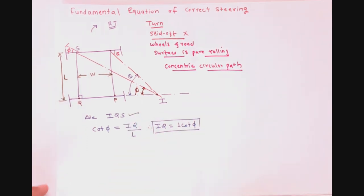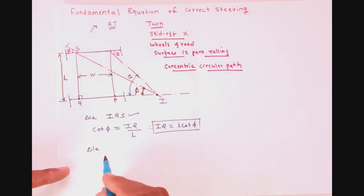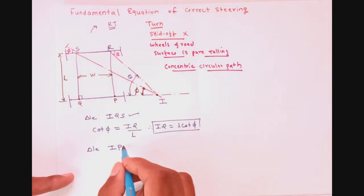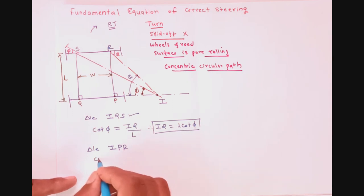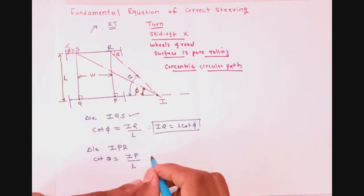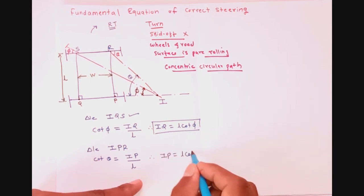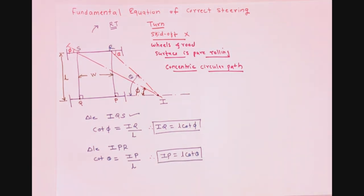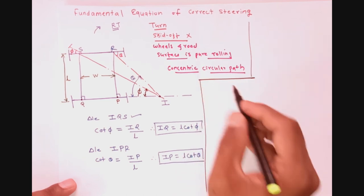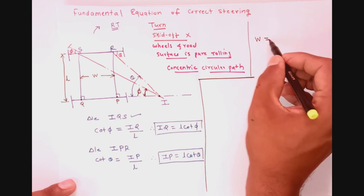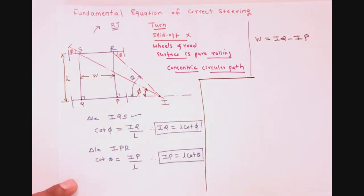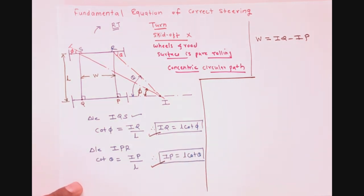From the second right-angle triangle IPR, which is right-angled at P, including the angle turned by the inner wheel theta, we again have cot(theta) equals adjacent side IP upon opposite side PR, which equals the wheelbase L. Therefore IP equals L·cot(theta). The distance QP equals W.